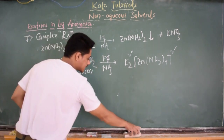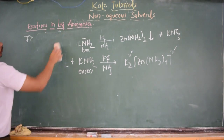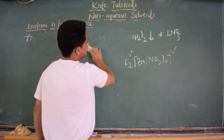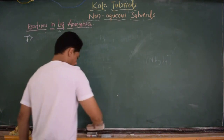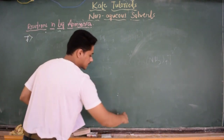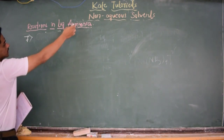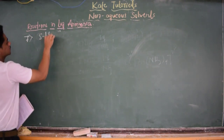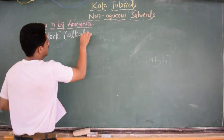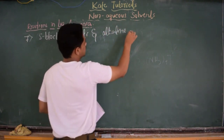There is one more interesting reaction of liquid ammonia — that is the reaction of liquid ammonia with S-block elements. S-block elements contain the first group and second group: alkali metals and alkaline earth metals.